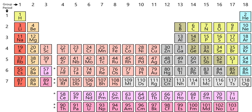It is this periodicity of properties — manifestations of which were noticed well before the underlying theory was developed — that led to the establishment of the periodic law and the formulation of the first periodic tables.